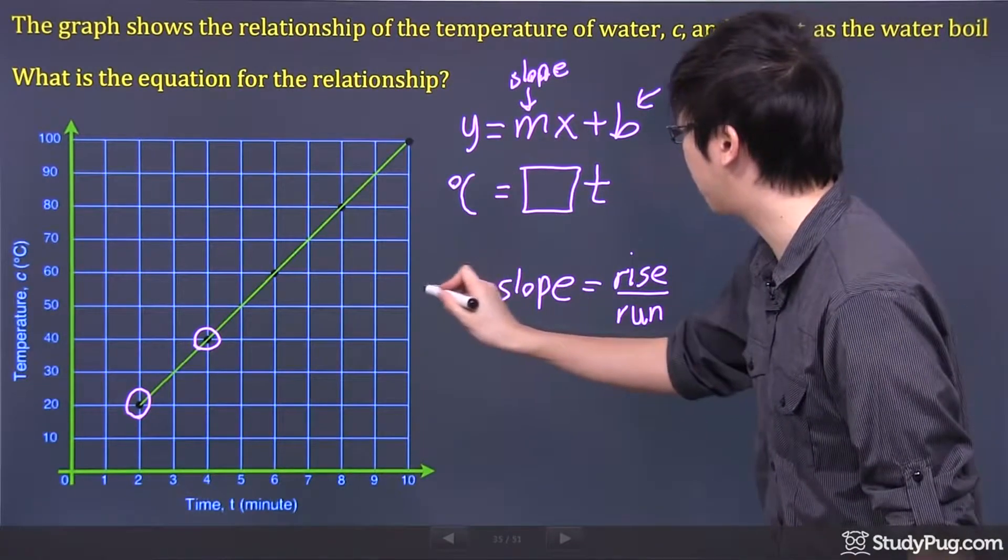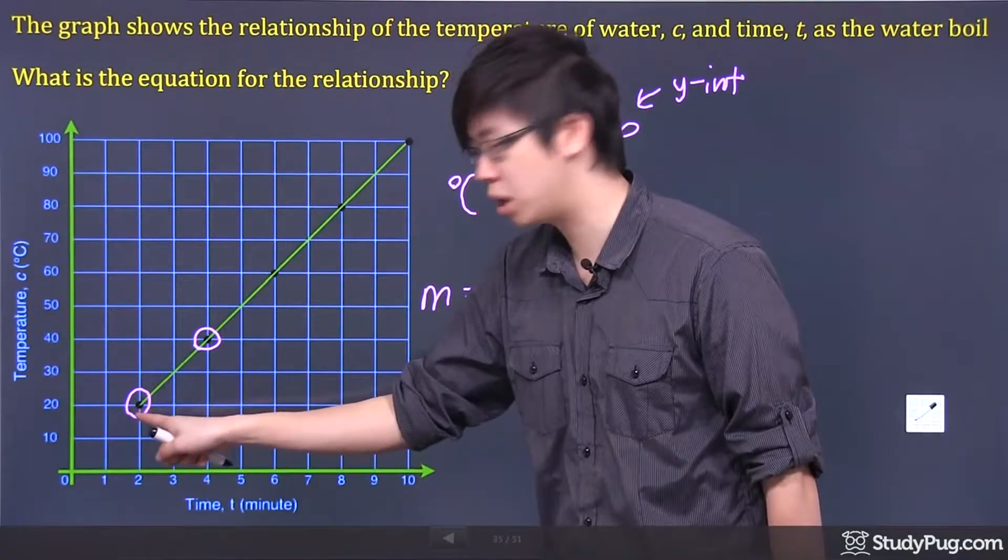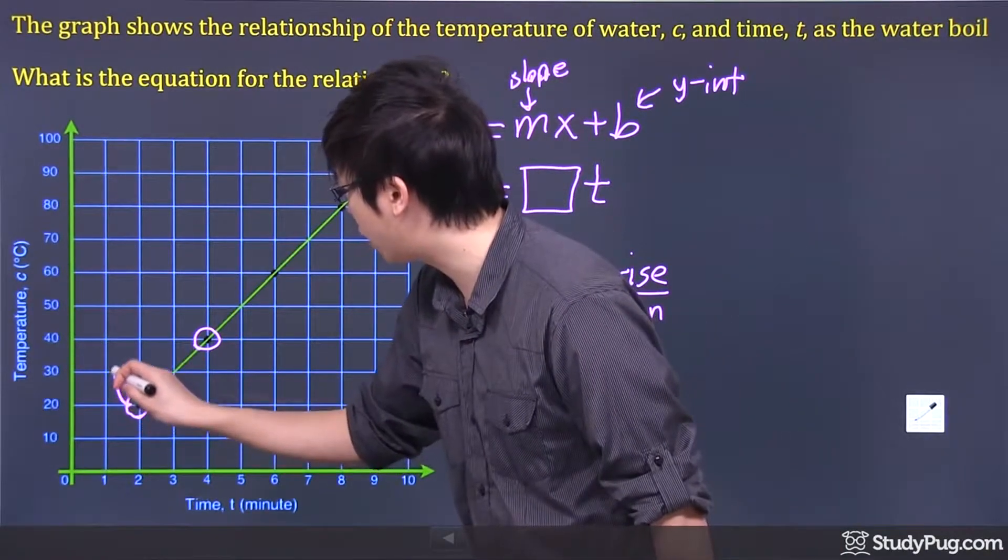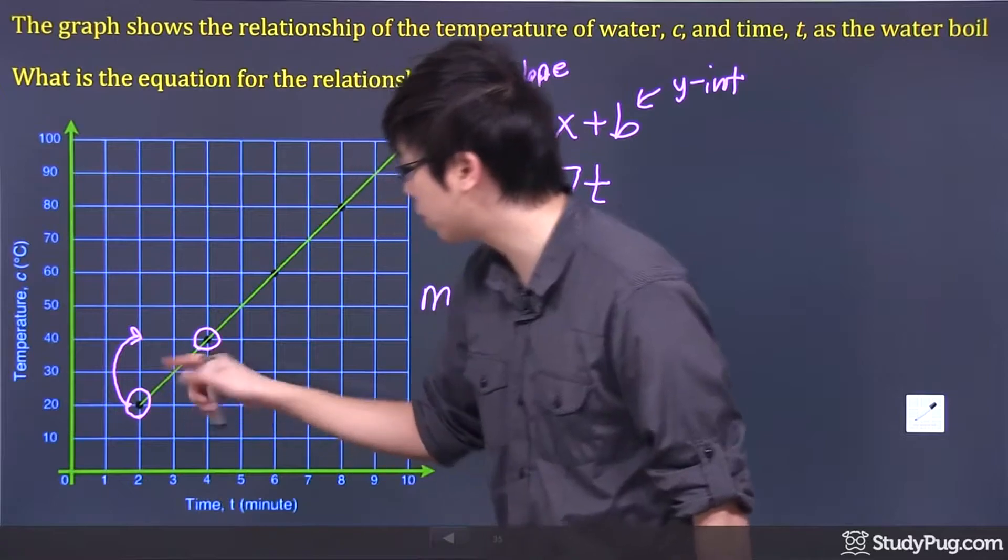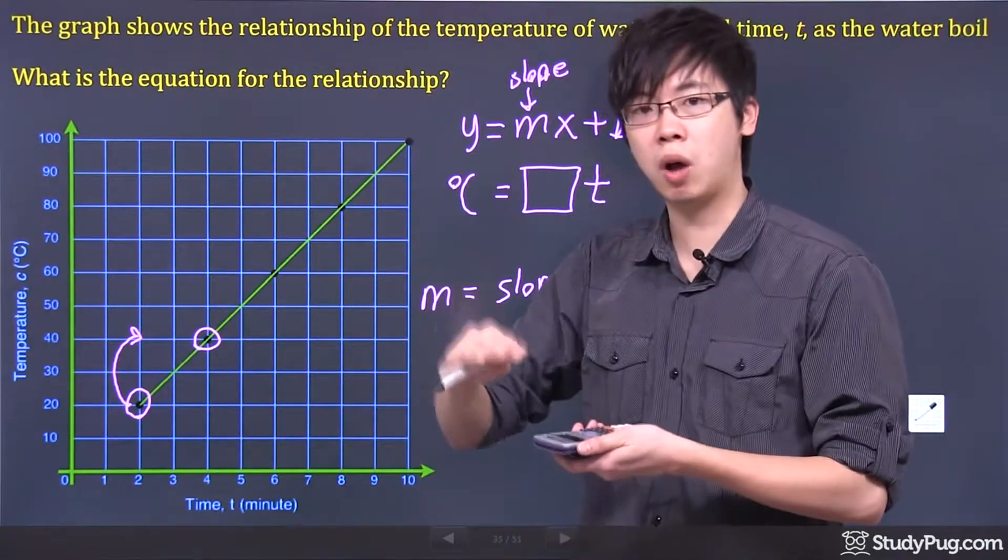All we have to do is just think about that in order for me to go from here to here, I need to go up 20 units first. So this is 20, this is 40, so the difference is that I need to go up 20.